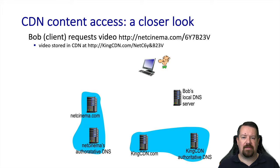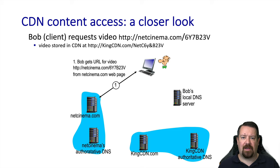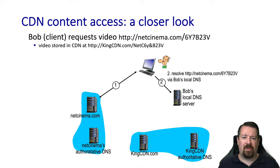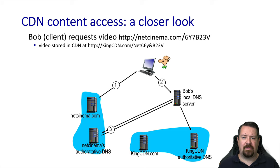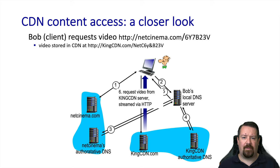In this example, Bob is browsing the Net Cinema website and picks out a video to watch. The website supplies a URL for that video. When Bob looks up the DNS for that URL, it turns out to be a CNAME, and Bob gets redirected to KingCDN. The DNS server then goes to KingCDN's authoritative DNS to find an IP address corresponding to this URL, and Bob is able to request the actual video file from the KingCDN server via its IP address. This redirection gives the CDN the opportunity to decide which DNS record to give Bob back based on what it knows about him — namely his IP address, which can be mapped to an approximation of Bob's location.